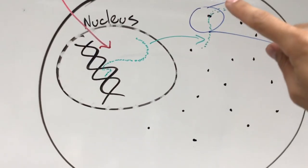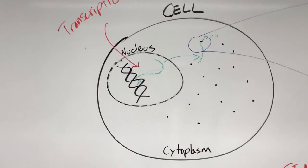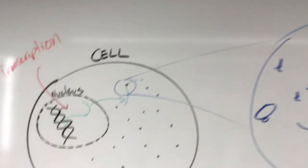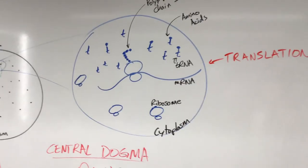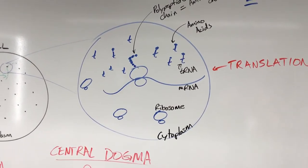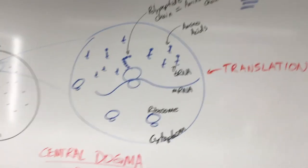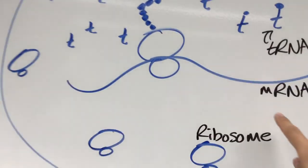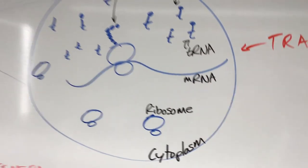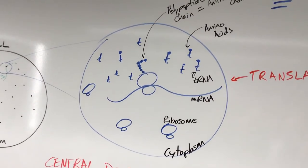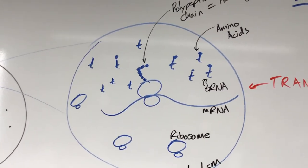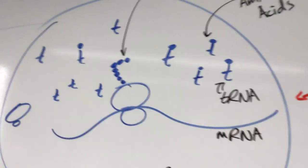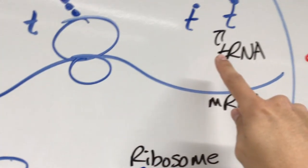A ribosome will latch onto that messenger RNA molecule. And we're going to zoom in. Pretend I zoomed in. And we've got that ribosome latched on to that messenger RNA molecule, hence the name mRNA. When that happens, that ribosome that's latched on is going to round up transfer RNAs, hence the name tRNA.